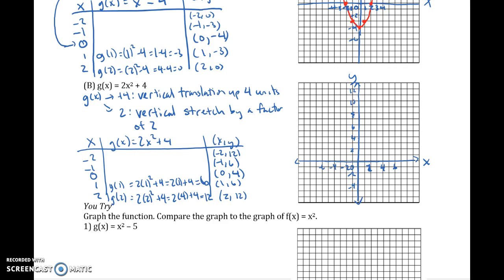Let's go ahead and plot our points: (0, 4), (1, 6), (2, 12), (-1, 6), (-2, 12), and there we go. So you can see how the graph went up, and hopefully your U looks a little prettier than mine. Mine's looking more like a V. So it's going up. It moved up 4, and then it got skinnier.